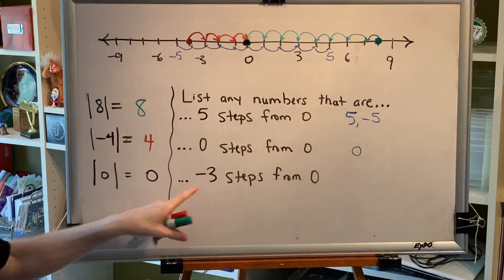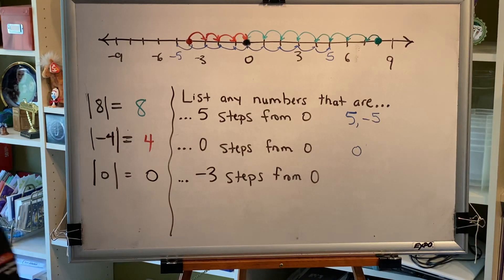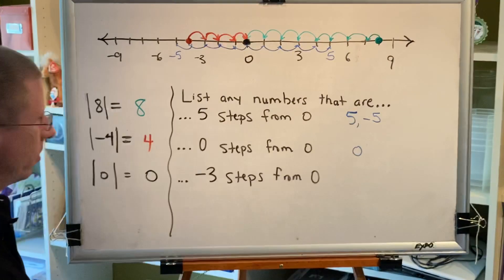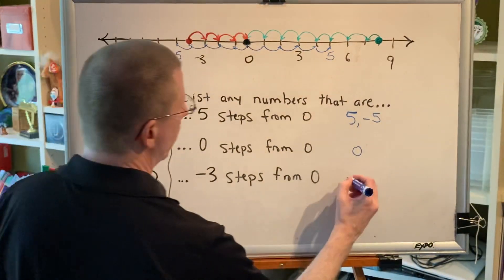List any numbers that are negative three steps from zero. A distance cannot be negative. Therefore, it's impossible to move negative three steps. The answer is not possible.